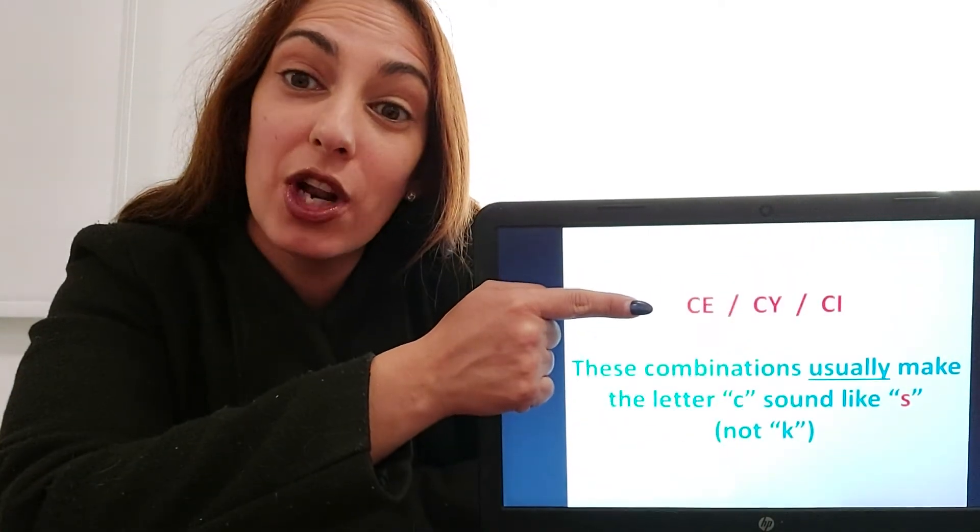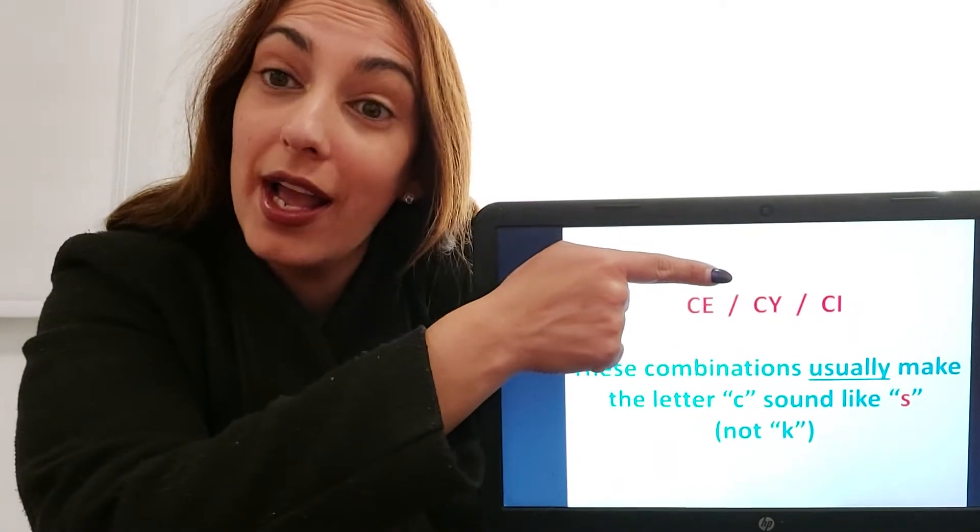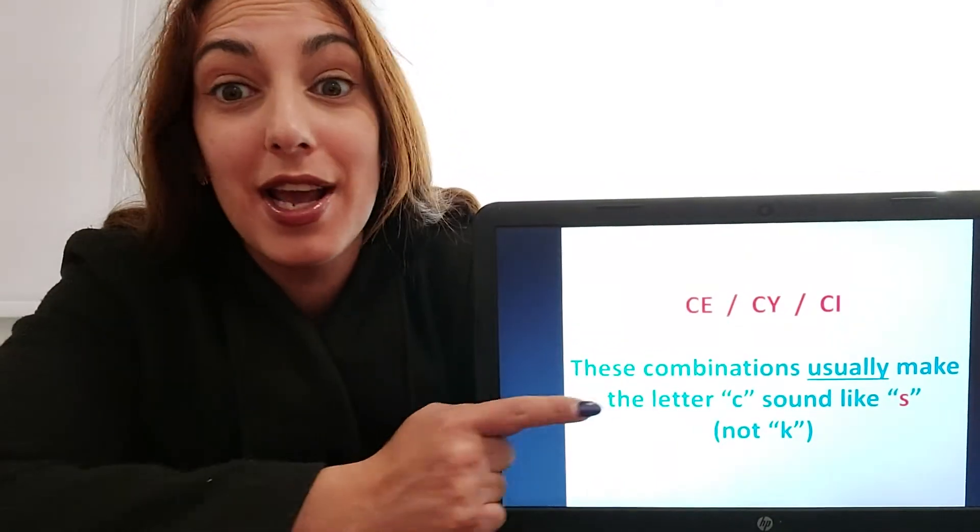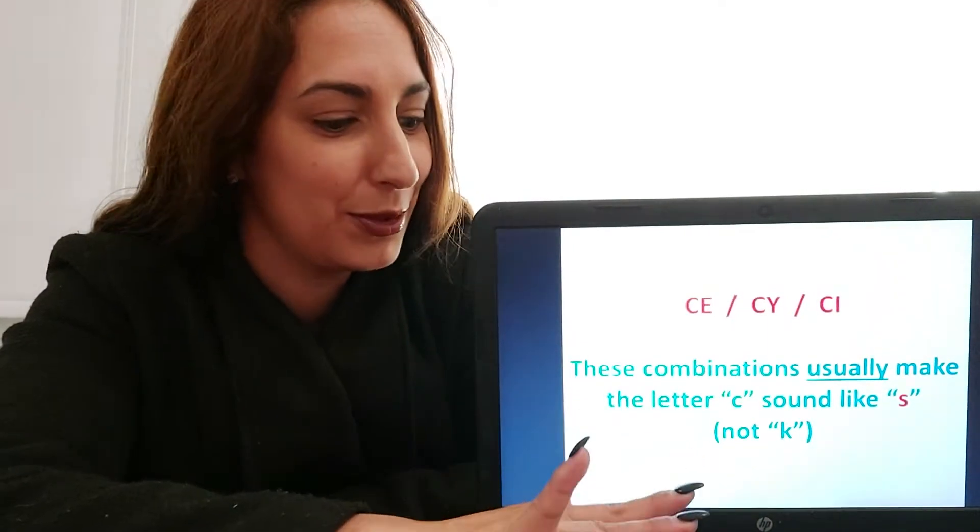Now, when C is followed by E, Y, or I, that's when we have to say S instead of K. Let's have a look at some examples.